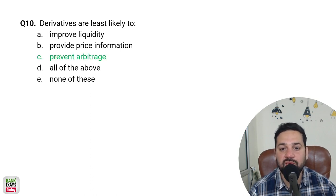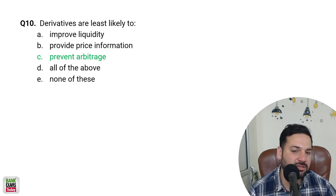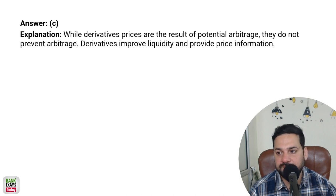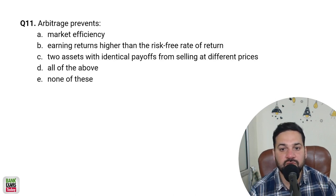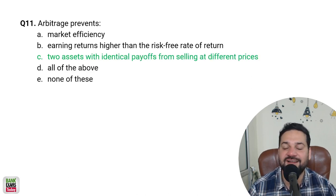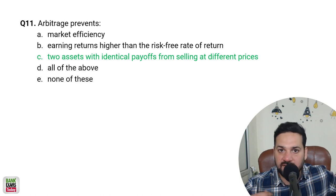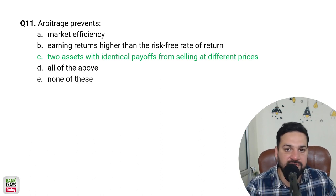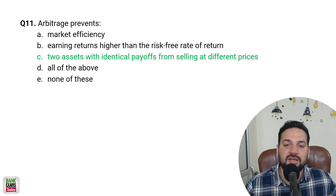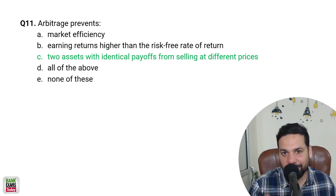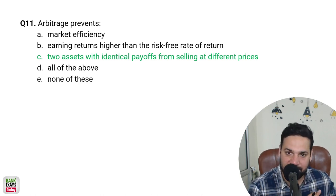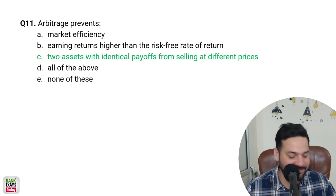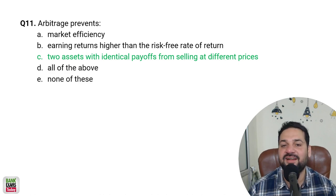Derivatives are least likely to prevent arbitrage. Arbitrage means two assets with identical payoffs selling at different prices. For example, potatoes selling at different prices in two markets in the same city — intelligent people will buy at the lower price and sell at the higher price, and at the end of the day the prices become the same.